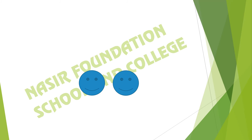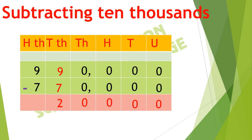We are left with 2, so we write 2 in the ten-thousands column. Now we subtract 7 hundred-thousands out of 9 hundred-thousands; 9 minus 7 gives 2, so we write 2 in the 100,000 column. Here we get the estimated answer of 220,000.